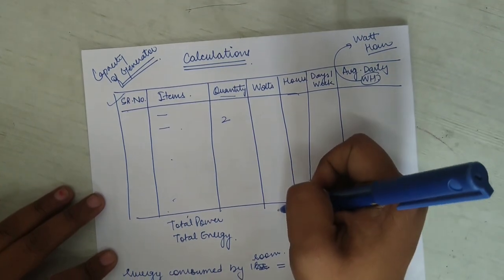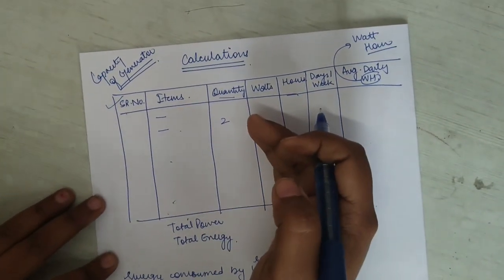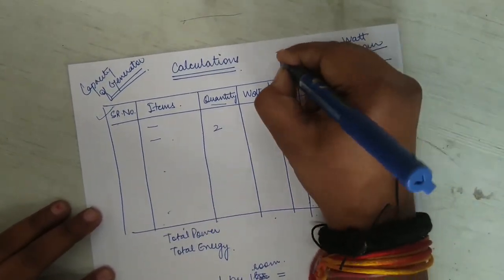If you have two lights in your room, then the number needs to be added here so that we can multiply it with the watts. And then the number of watts it is using, that needs to be added. When we multiply this quantity with the watts, we'll get our power.